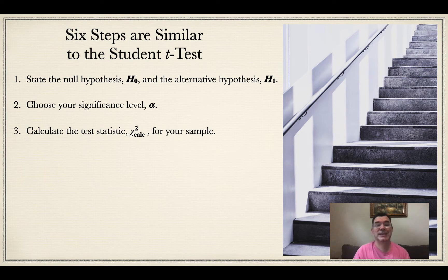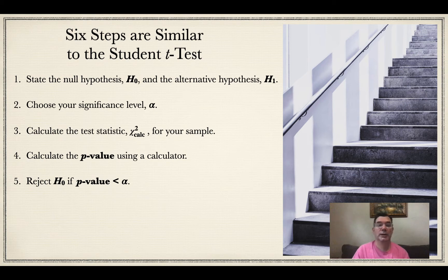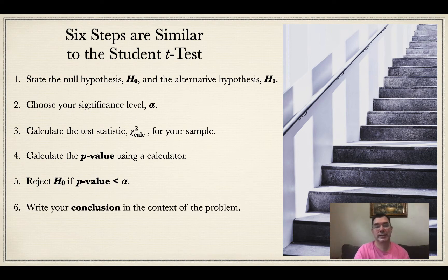We will calculate the test statistic, which is now what I'm calling χ²calc, and that's going to be for our sample. We're going to calculate the p-value using a calculator. We are going to reject our null hypothesis if our p-value is less than our value for alpha, and then we're going to write our conclusion in the context of the problem.